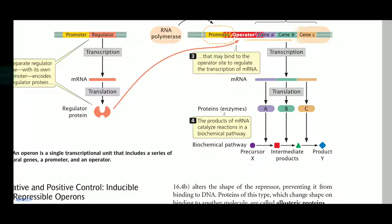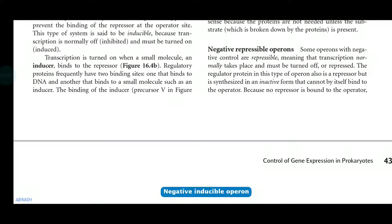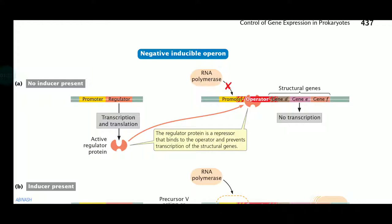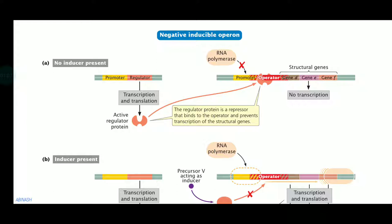There is negative and positive control. The negative inducible operon means it will be induced — in the case where there is no lactose, it will be induced and this repressor will go and bind with that operator region.